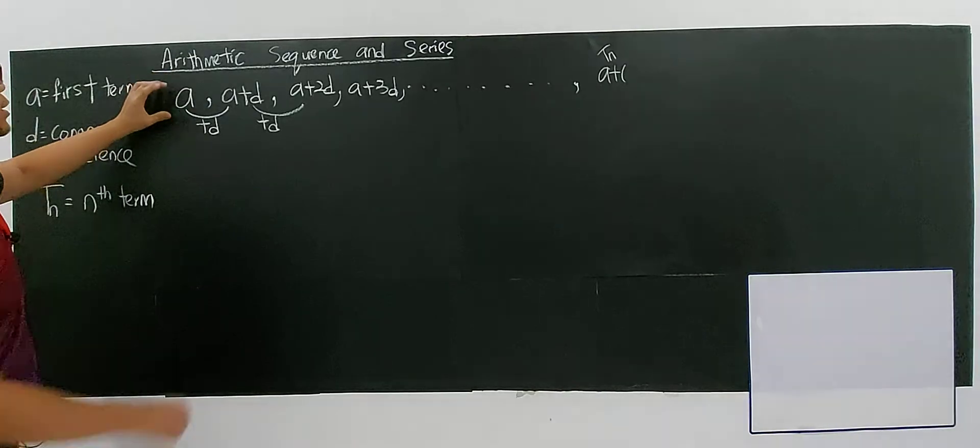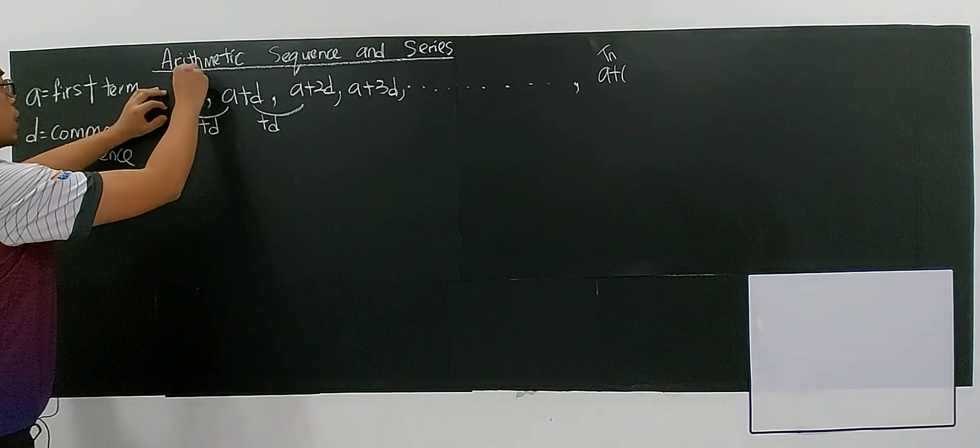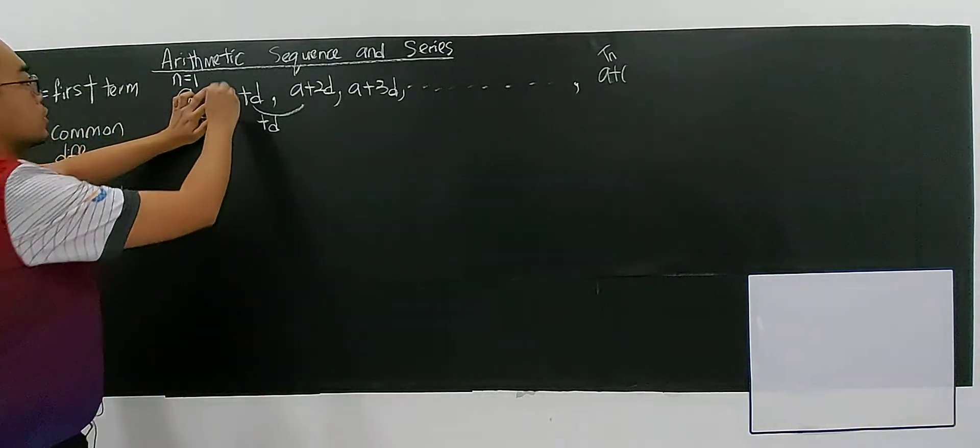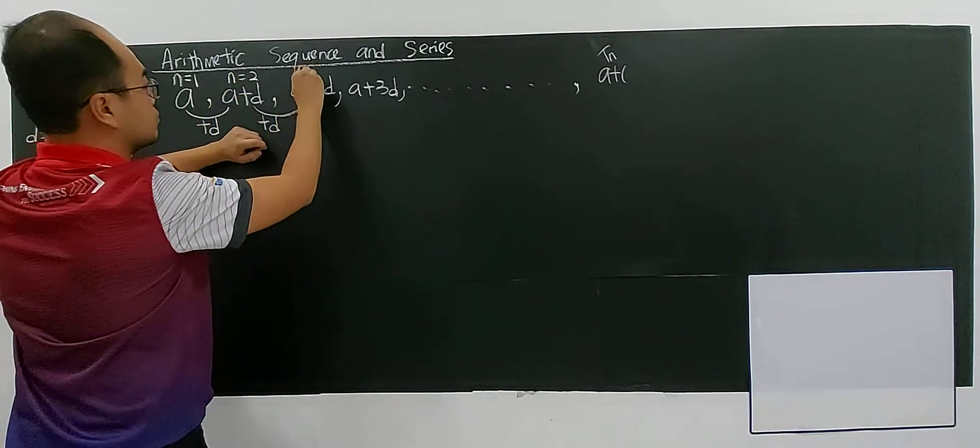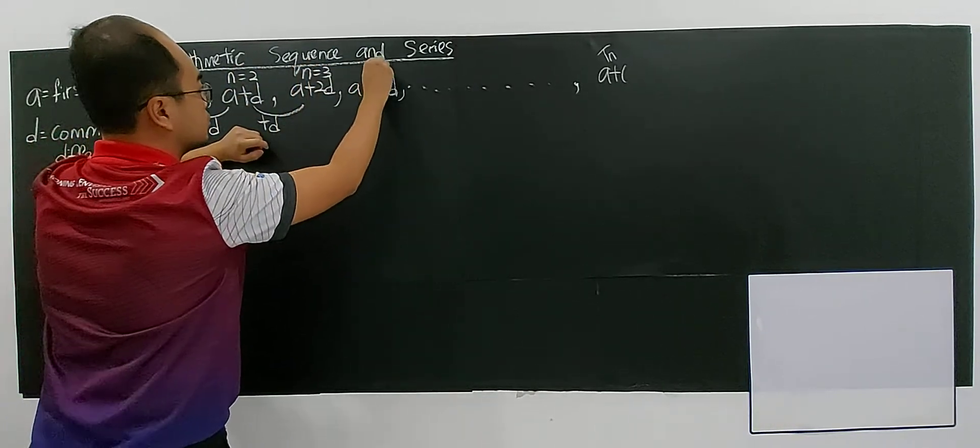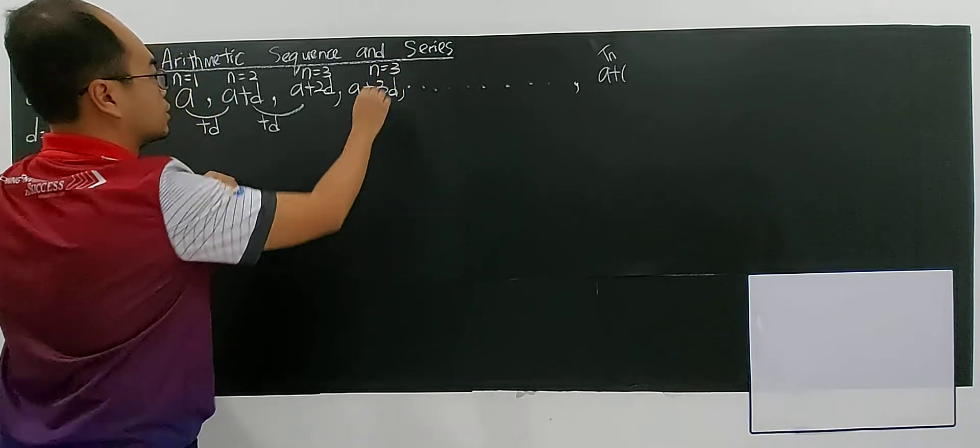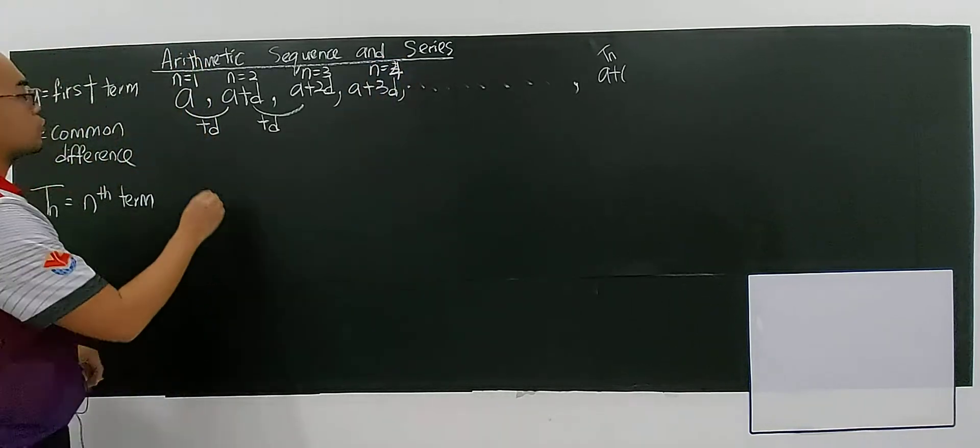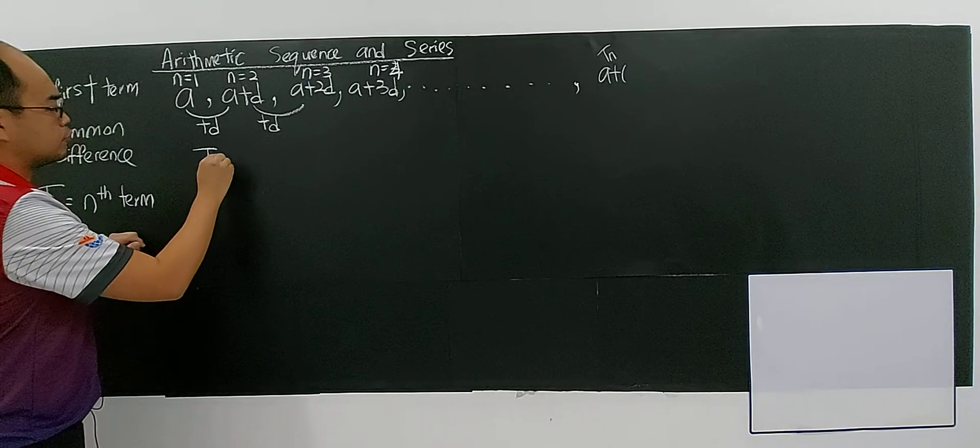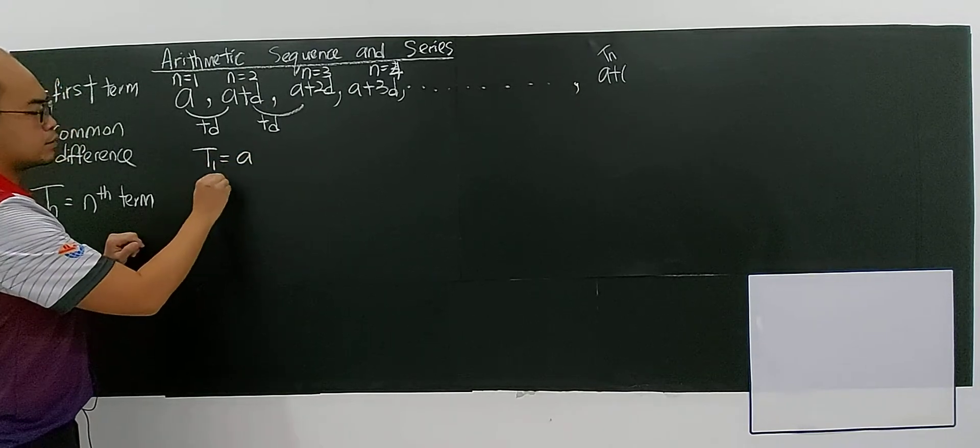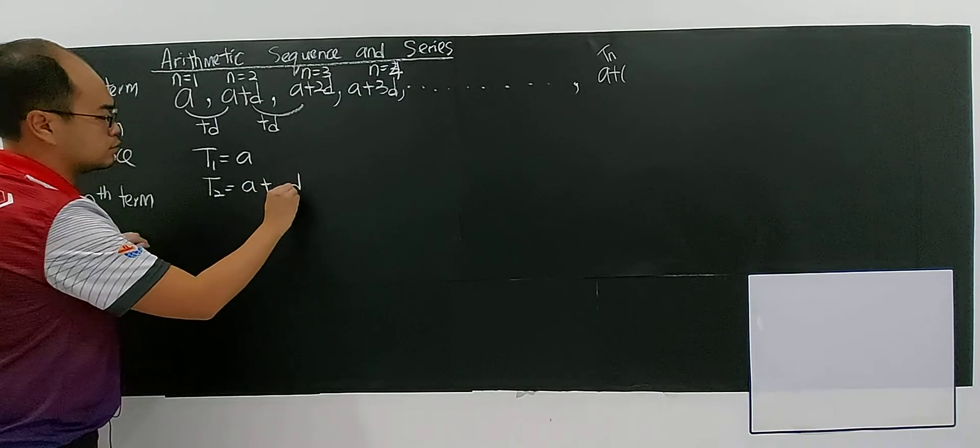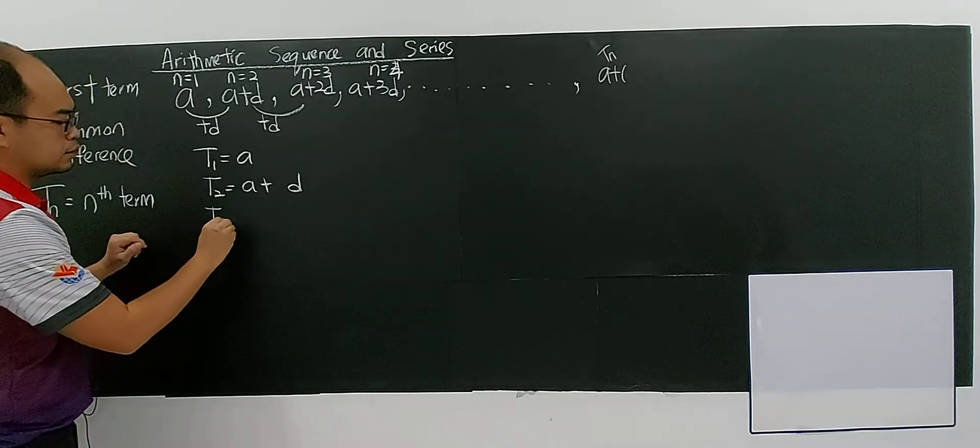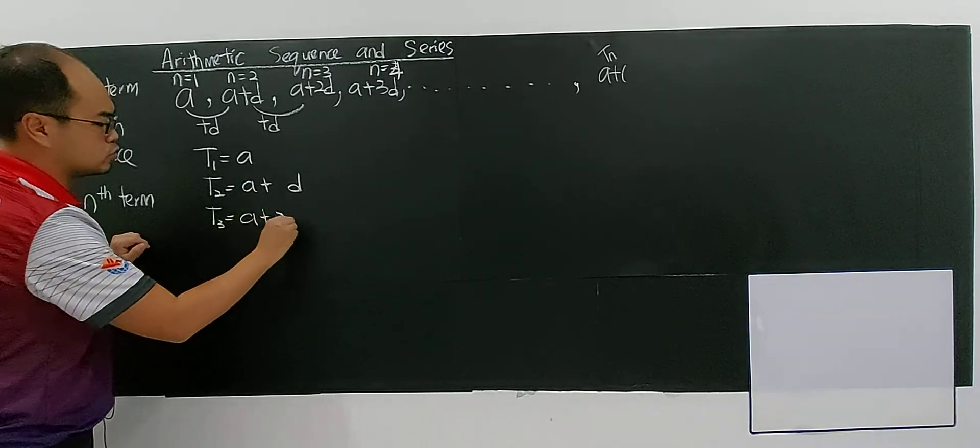For example, A - this is when N equals 1. When N equals 1, the first term is 1. Second term, third term, fourth term. If you list out, you can see that the first term is A, the second term you will have A plus D, and the third term you will have A plus 2D.